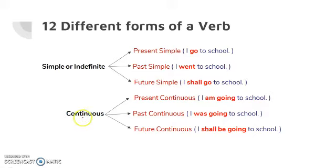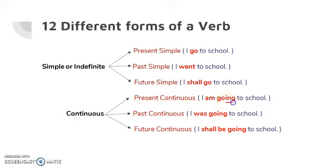Now let us move to continuous. From the word 'continuous' itself, you know continuous means something is in continuity — the action is in progress. This can also be divided into three: present continuous, past continuous, and future continuous. In present continuous, the action is going on at the moment of speaking. For continuous tense, you should add the ing form of the verb. Here 'am' be verb is used because the subject is 'I'. So: 'I am going to school'.